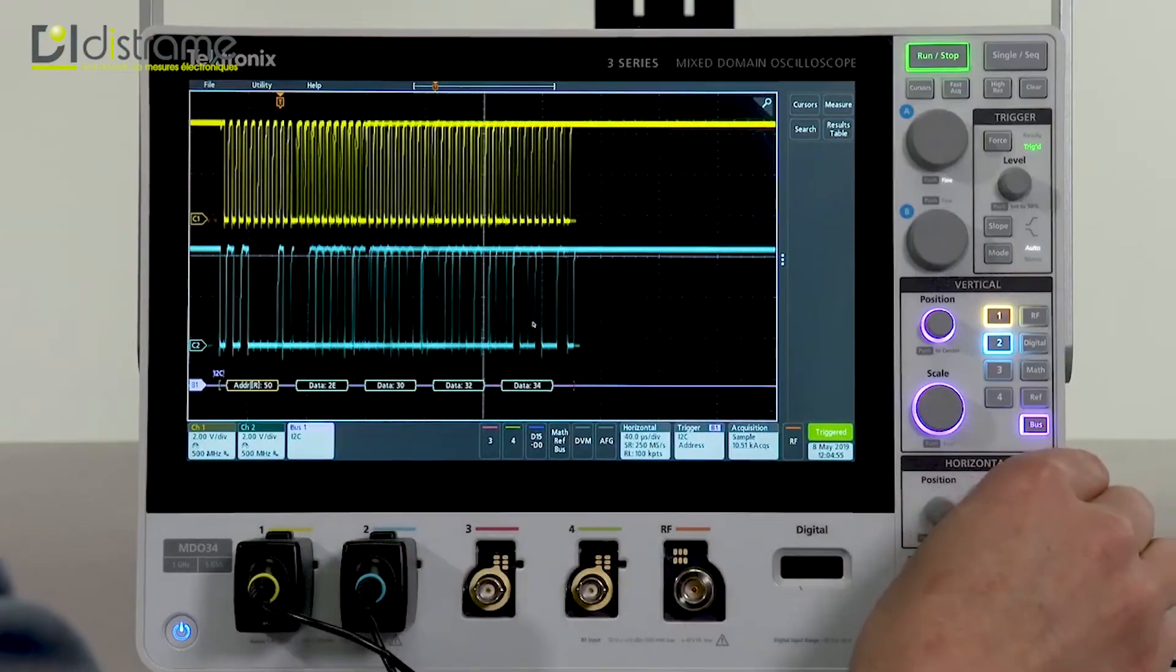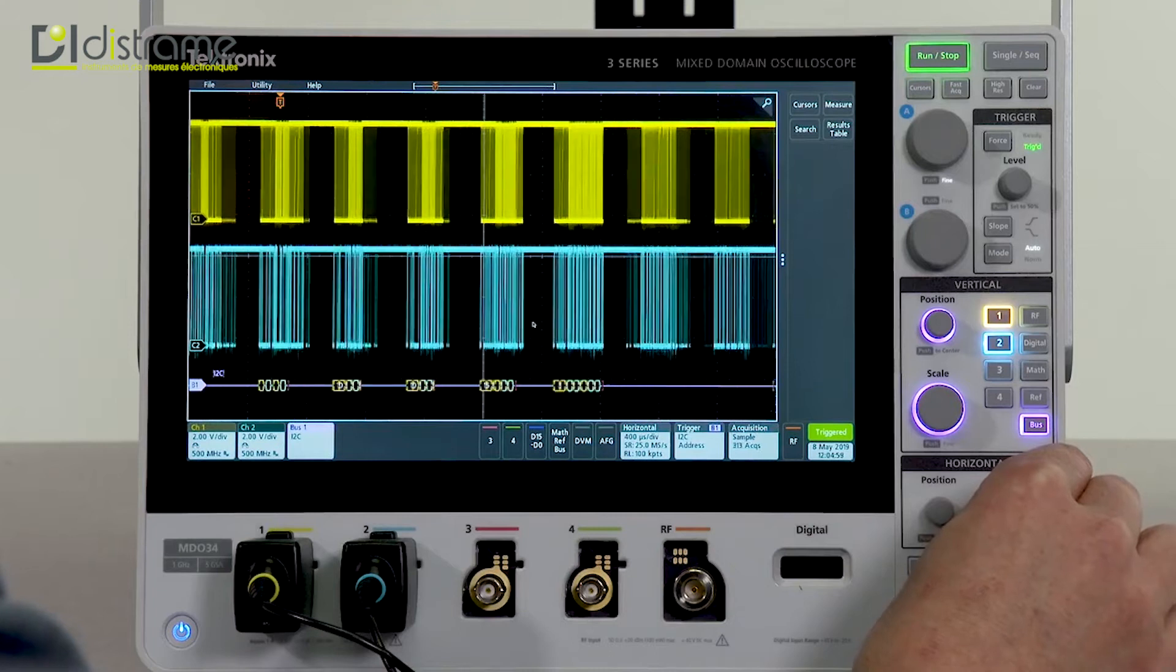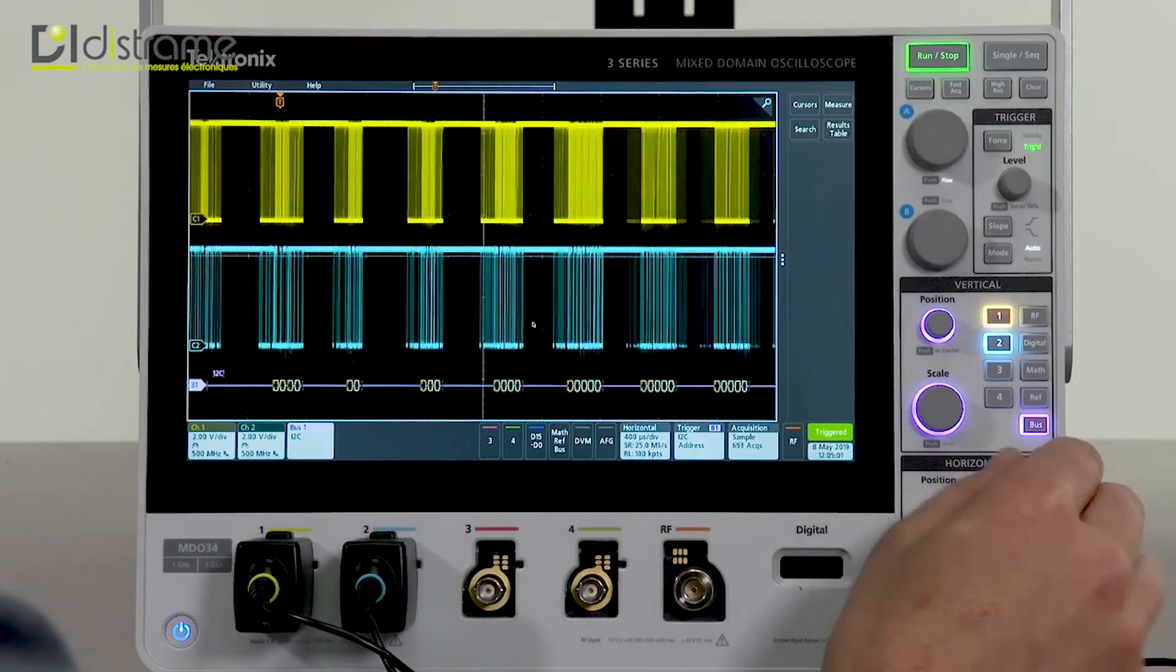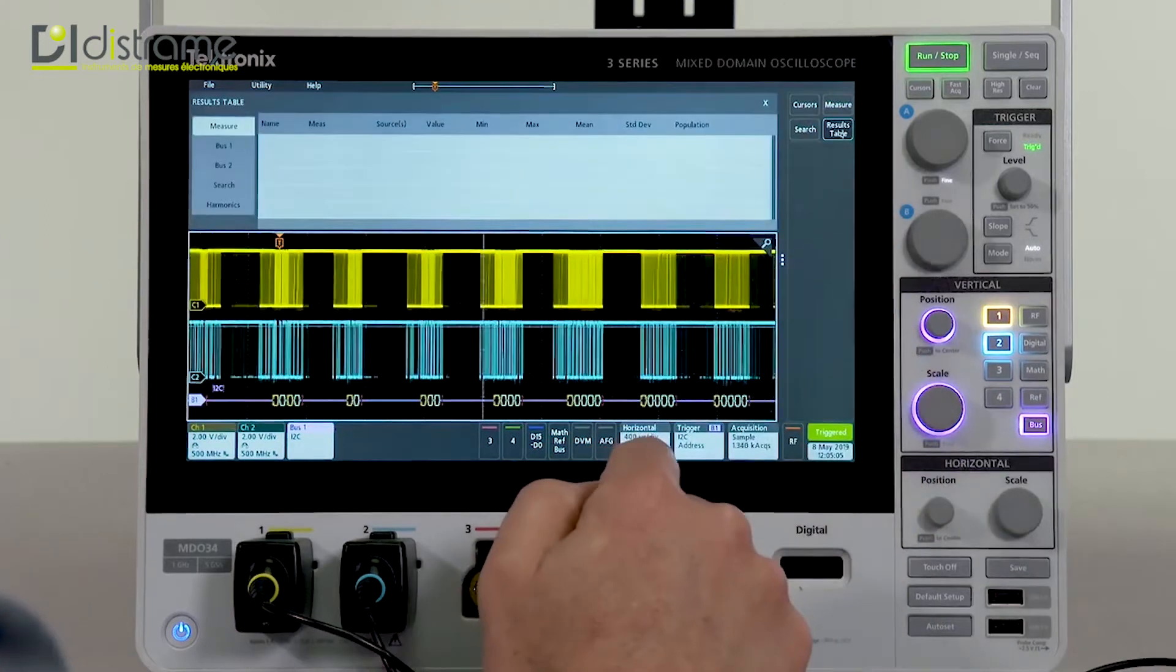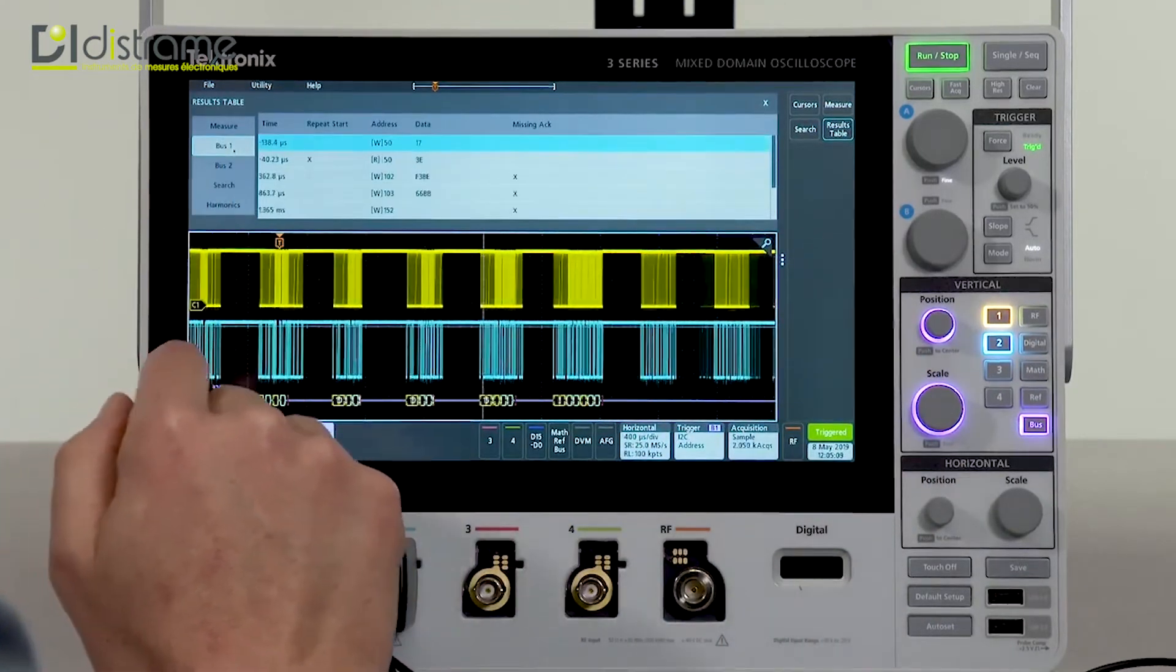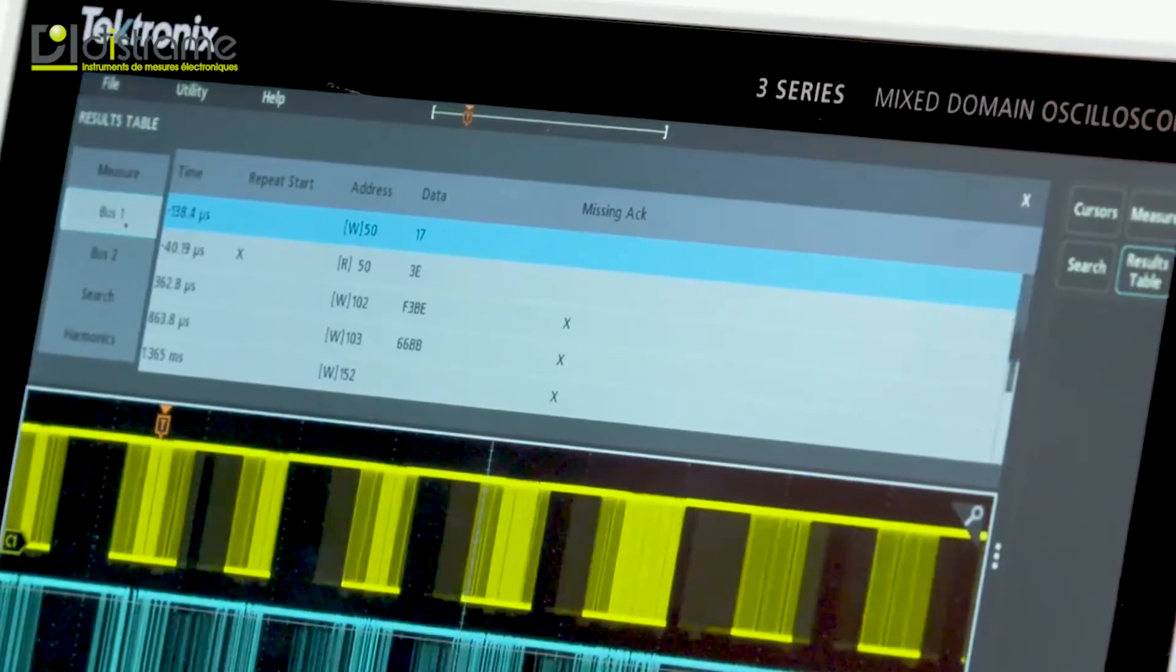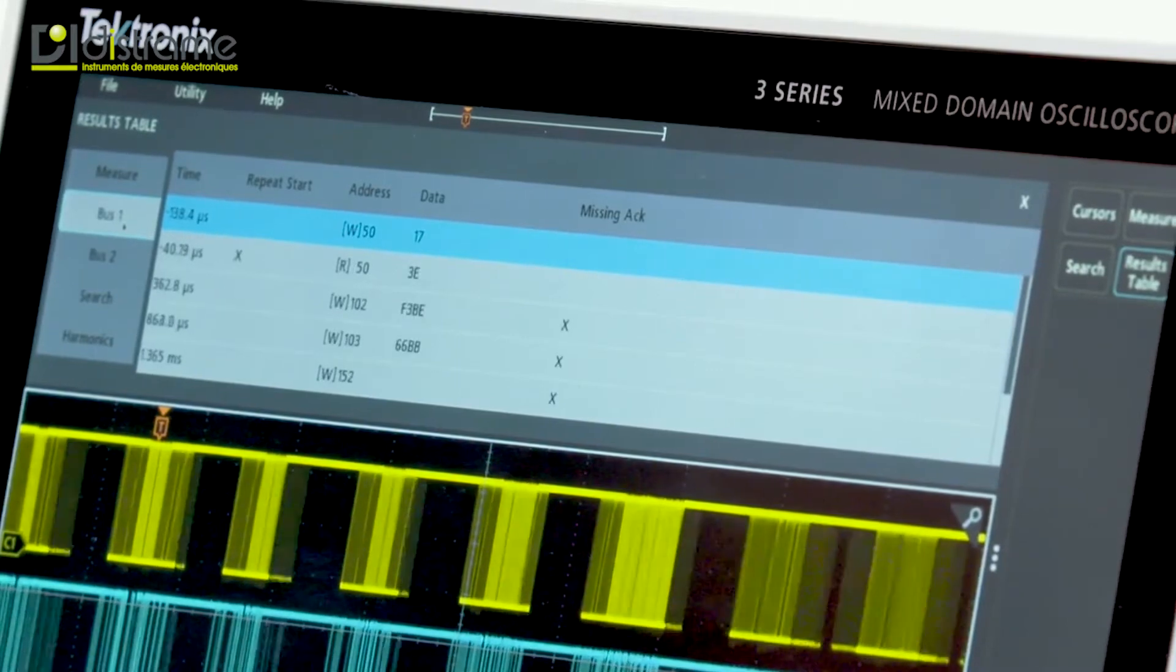If we wanted to look at more, we can scale out and see a longer period of time. And another way of viewing this packet information is with what we call a results table. With a results table, if I select bus 1, you can see all of the packets that are being acquired in each acquisition laid out in a tabular format for easy viewing.